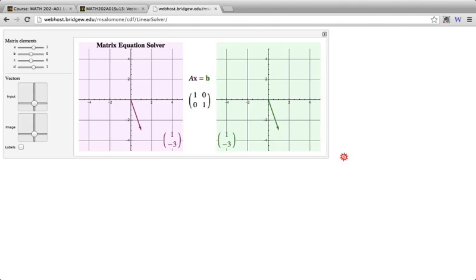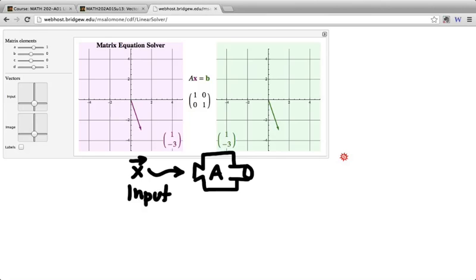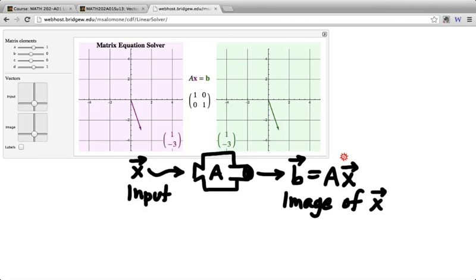And when I say image, what I mean is the vector in the codomain which results from multiplying x. So if x is over here, I might call this x the input to my function. And then I'm thinking of my matrix as being like a function, which is a little machine here, and we put x into this machine, and out of this machine comes a vector b, which we get by multiplying x by the matrix A. And I'm going to call this vector the image of x. So when I use the word image, this is what I'm talking about. And so if x is 1, negative 3 in the domain, then the image of that x is 1, negative 3 in the codomain. So what did A do to this input? Also nothing.